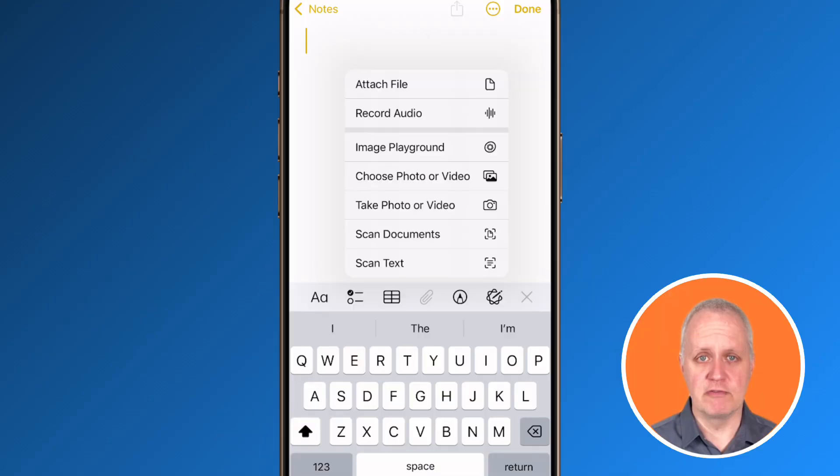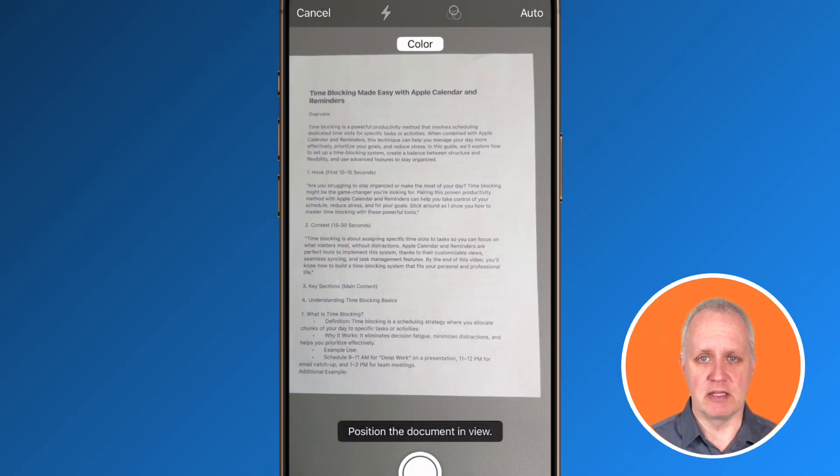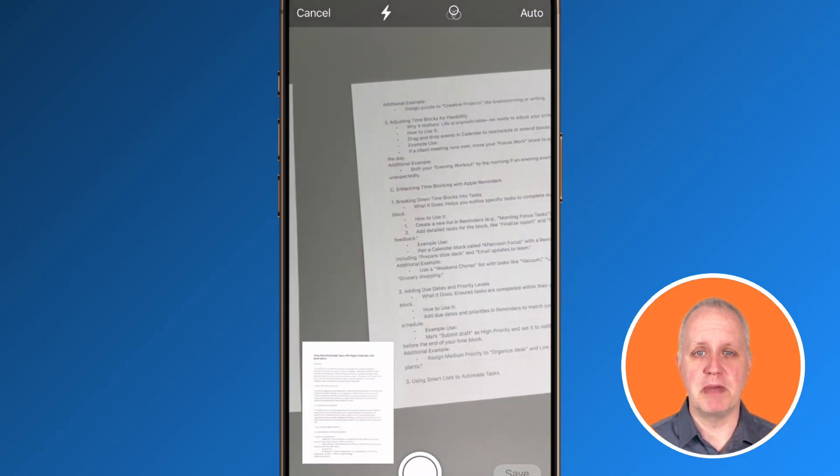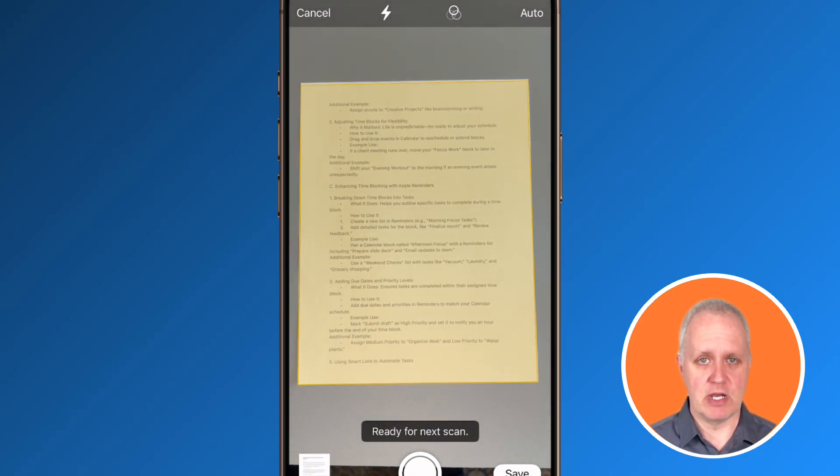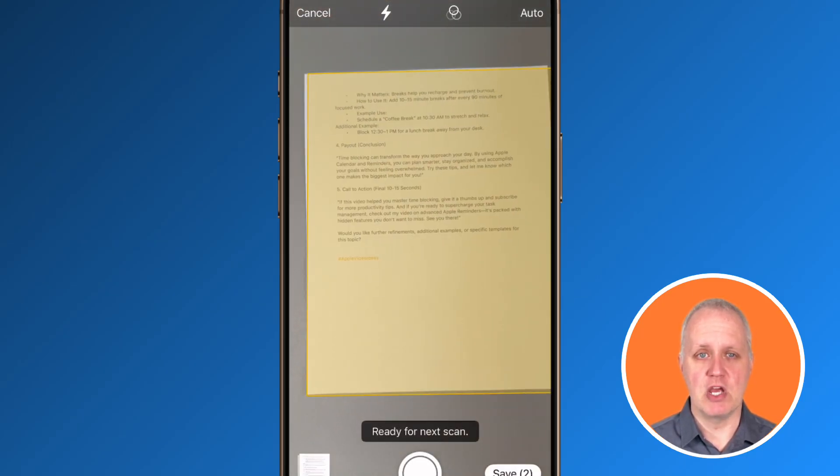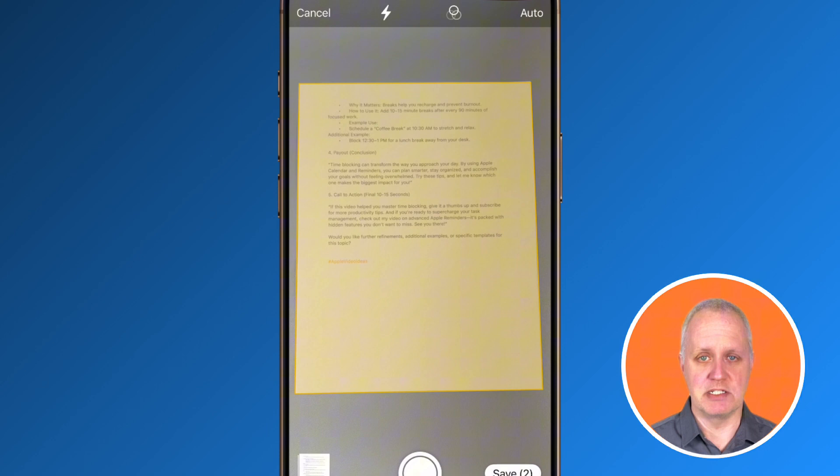There are a few advanced tips you should know as well. First, if you're scanning multi-page documents, you don't have to scan them one by one. Apple Notes lets you capture multiple pages in one go, which is perfect for long contracts, invoices, or reports. Simply scan a page and then when you move to the next page, it continues to scan.